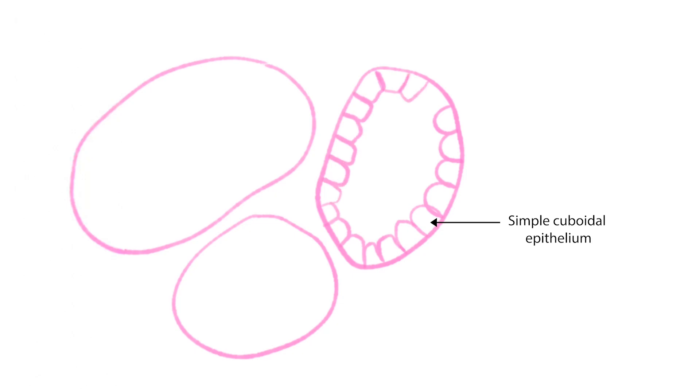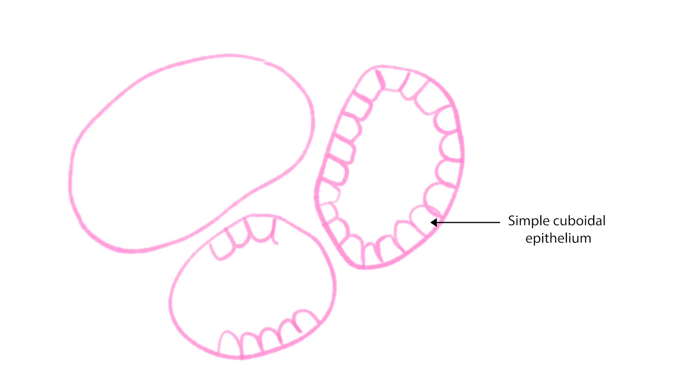Now, let us draw the epithelium lining the follicles. This epithelium is usually simple cuboidal. Draw each cell somewhat cuboidal in shape.